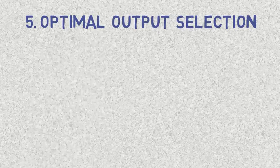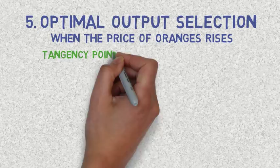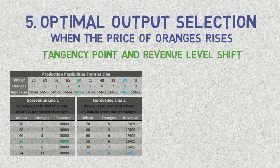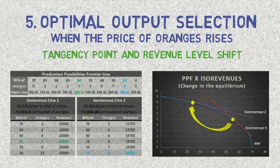If the price paid for each bushel of oranges rises, the farmer will produce more oranges. It is possible to determine a new optimal point of output selection. We suppose that the price paid for each bushel of oranges is now $2,086. The tangency point between the new ISO revenue line and the PPF curve corresponds to the production of 24 bushels of wheat and 8 bushels of oranges, corresponding to $19,705 of revenue. Therefore, the producer raised the number of bushels of oranges produced from 5 to 8, and decreased the number of bushels of wheat produced from 55 to 24.